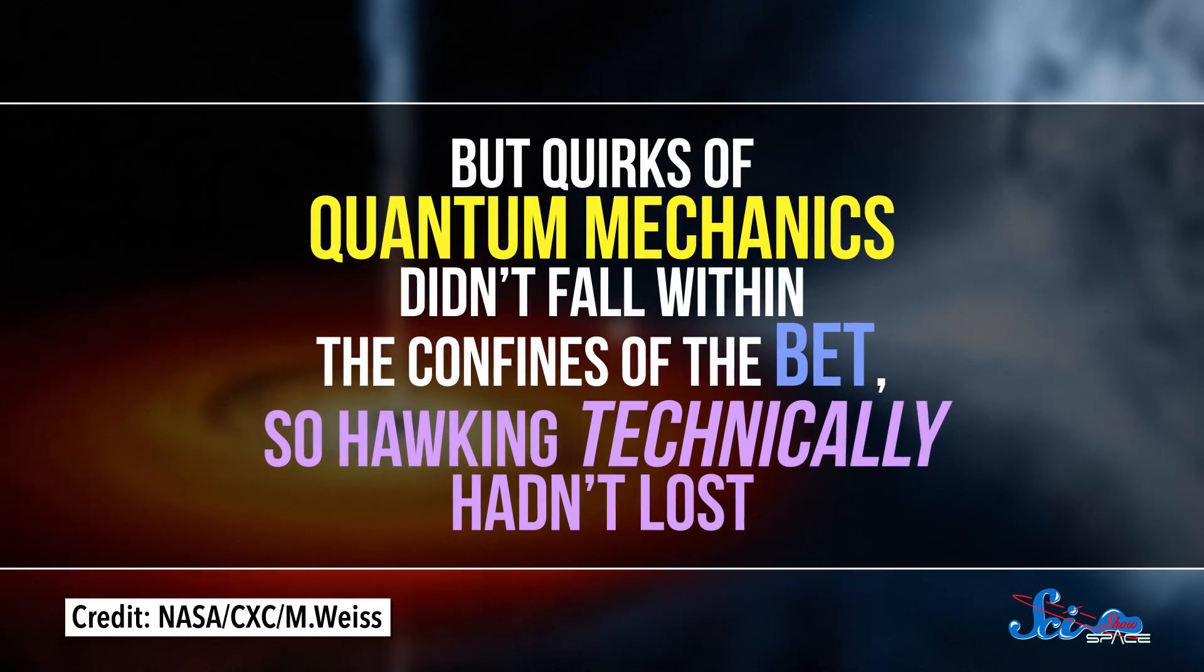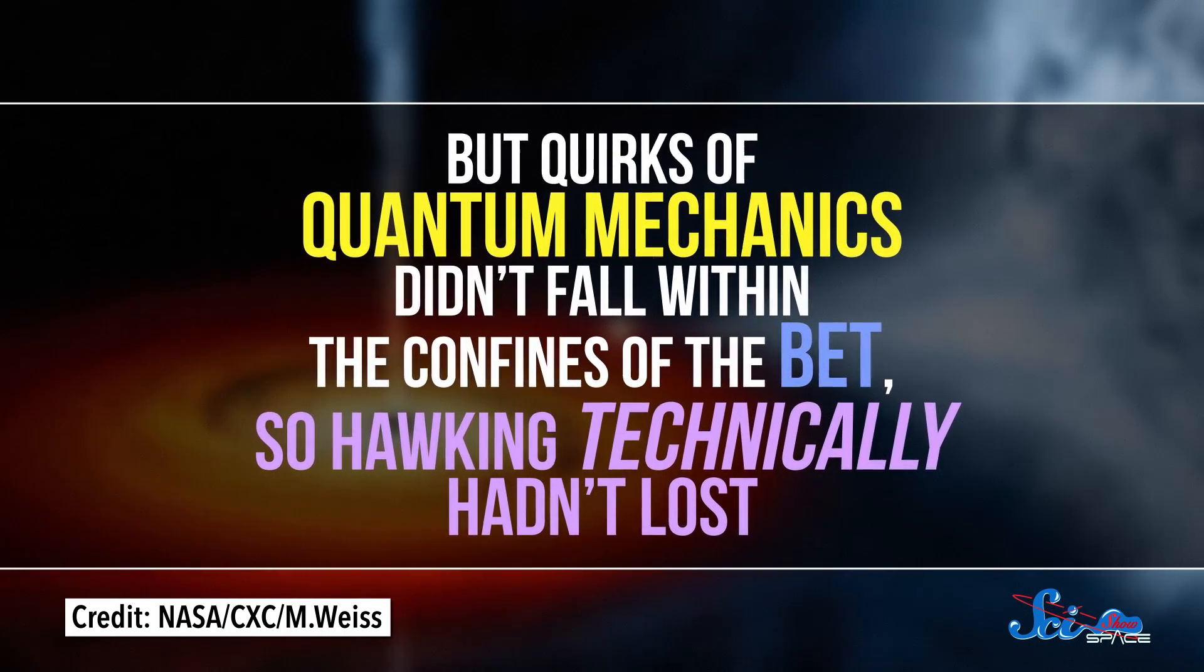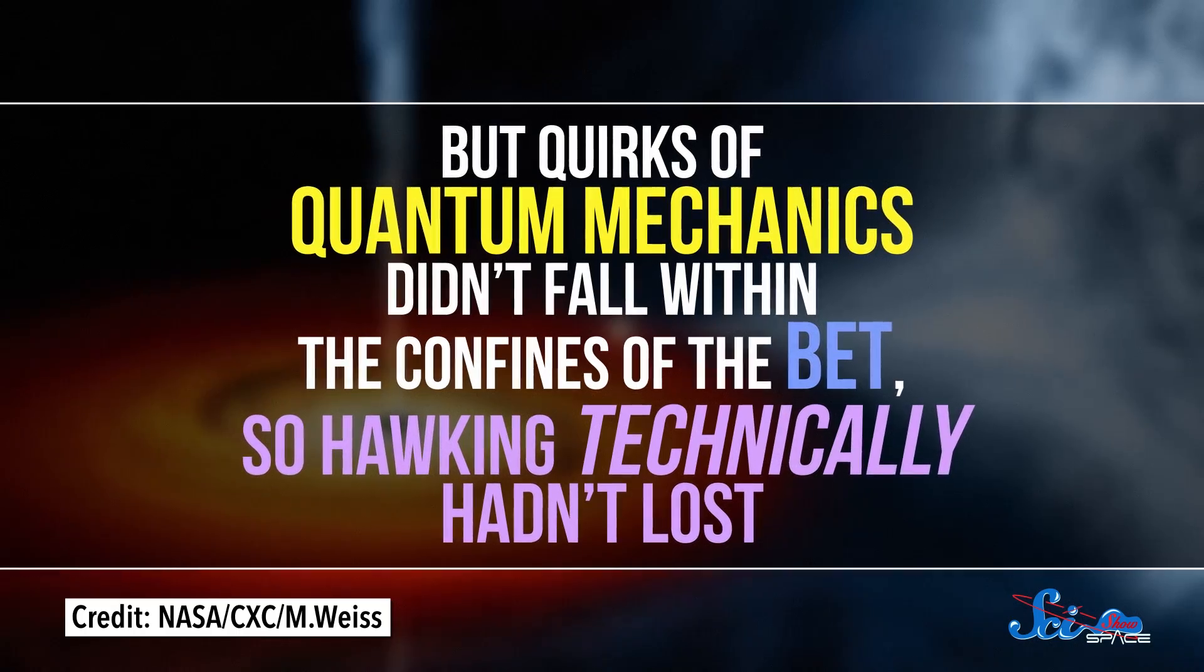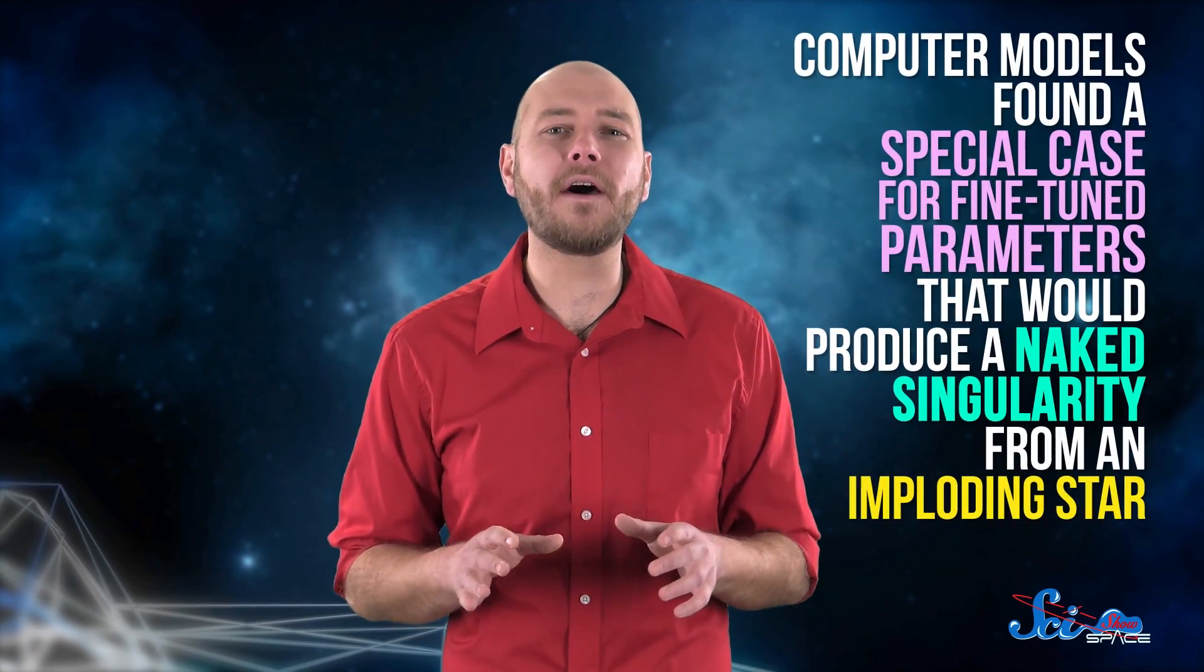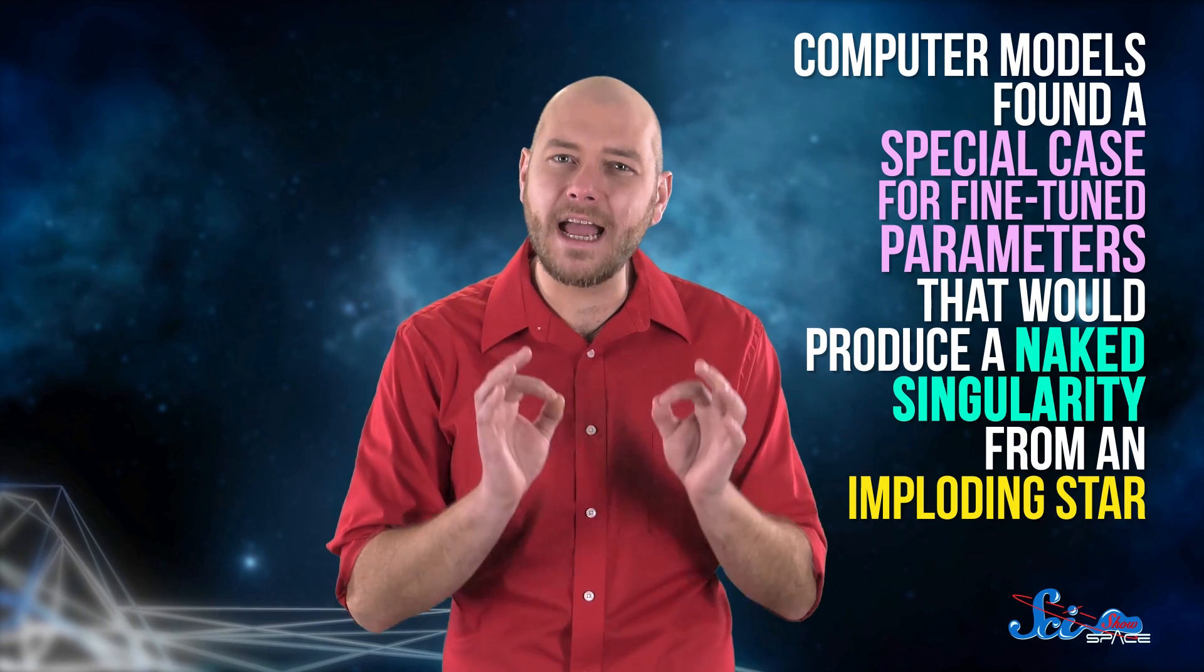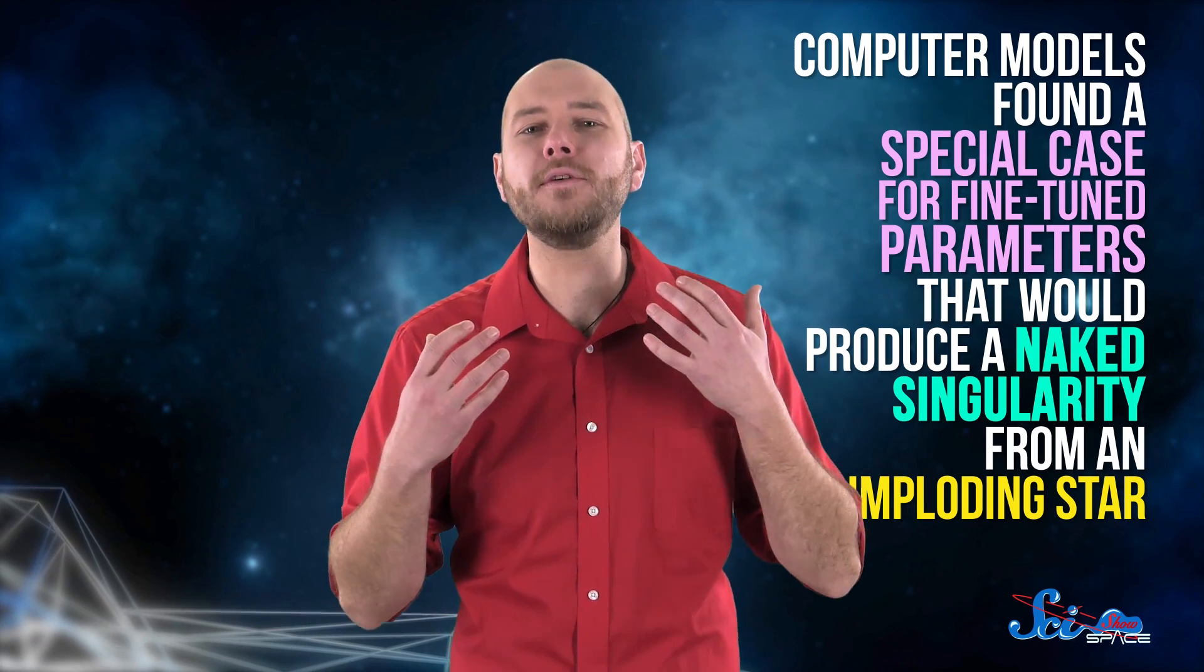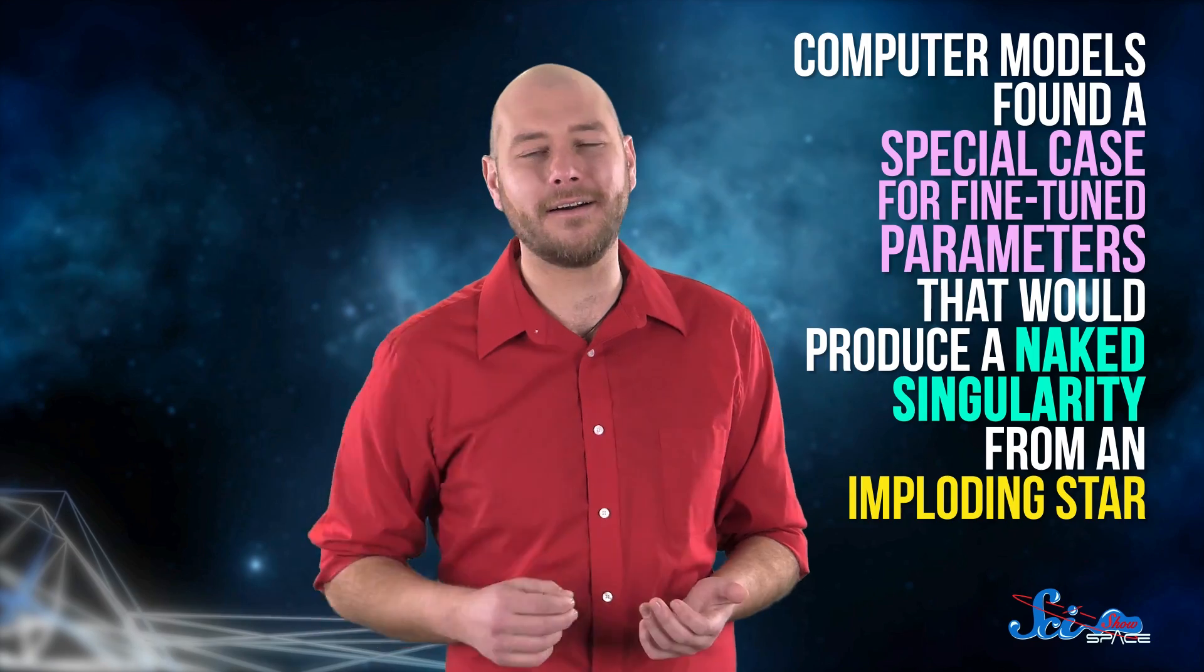But quirks of quantum mechanics didn't fall within the confines of the bet, so Hawking technically hadn't lost. He had to concede in 1997, though, when computer models found a special case for fine-tuned parameters that would produce a naked singularity from an imploding star. Basically, it's like trying to balance a sharpened pencil on the pointy end. Highly improbable, but not impossible.